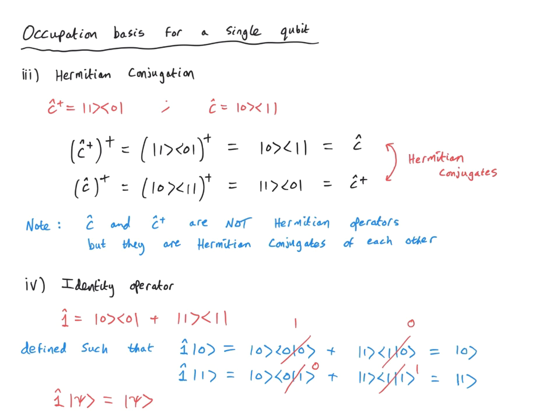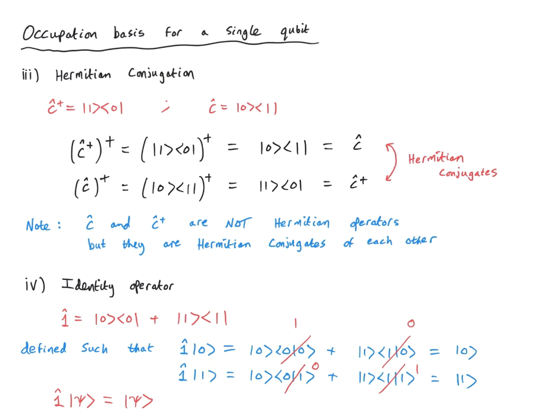It's straightforward to show that the identity operator acting on any state psi, which can be any complex linear combination of the states zero and one, will always give me back the state psi. In this sense, we refer to this object as the identity operator, and writing it out in full in terms of projectors is referred to as the resolution of the identity. In this case, the identity operator takes a simple form because we only have a two-dimensional state space.